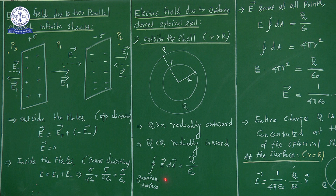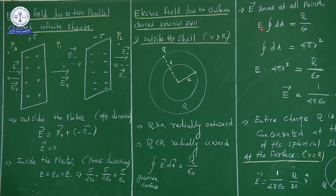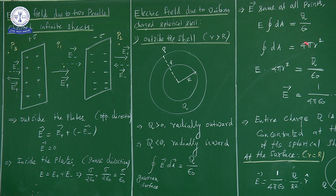We already know the formula: the closed integral of E vector dot dA vector equals Q by epsilon. Now, since the electric field is uniform, we can take it outside the integral. The integration of dA over the closed surface equals 4 pi r squared. So E into 4 pi r squared equals Q by epsilon naught.